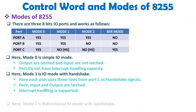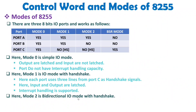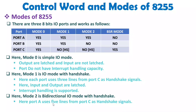Mode 2 is bidirectional IO mode, and it is applicable only to port A. Port C's role is to provide handshaking. Five lines of port C are used for handshake in mode 2 — three lines are used for output and two lines for input. BSR mode has already been discussed in detail.